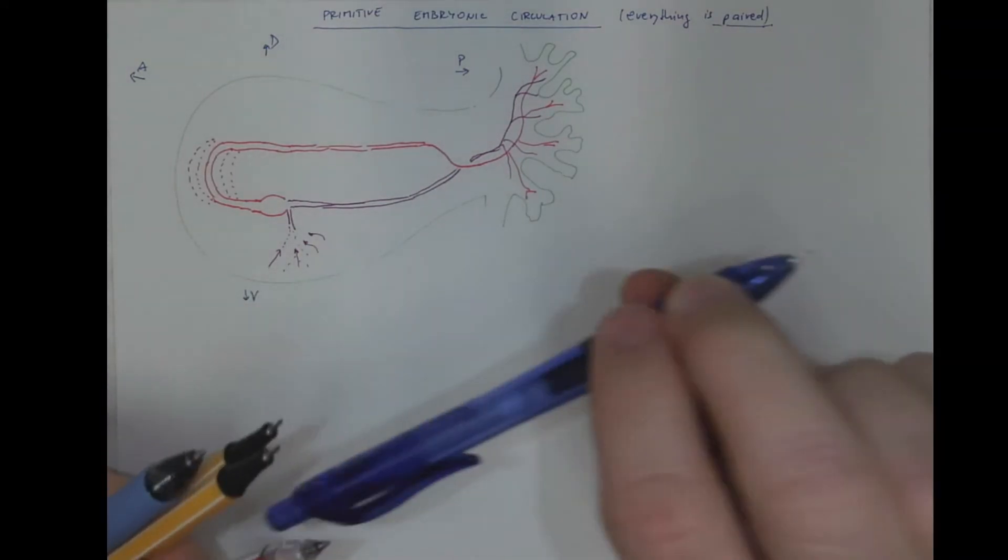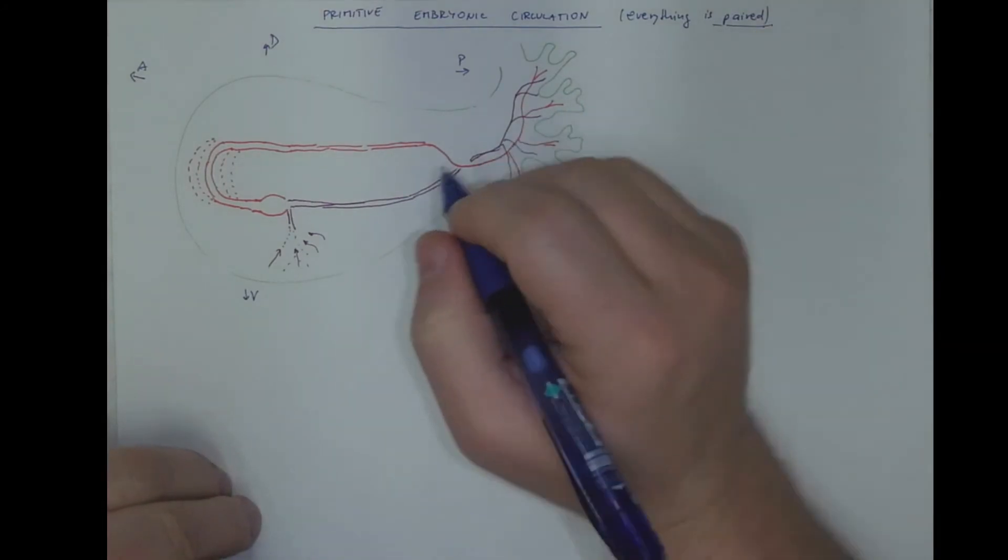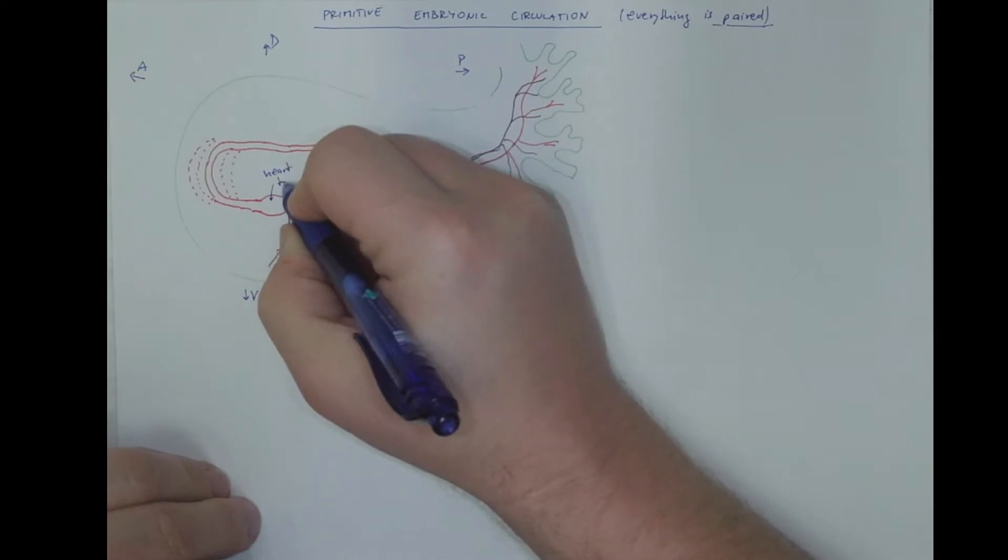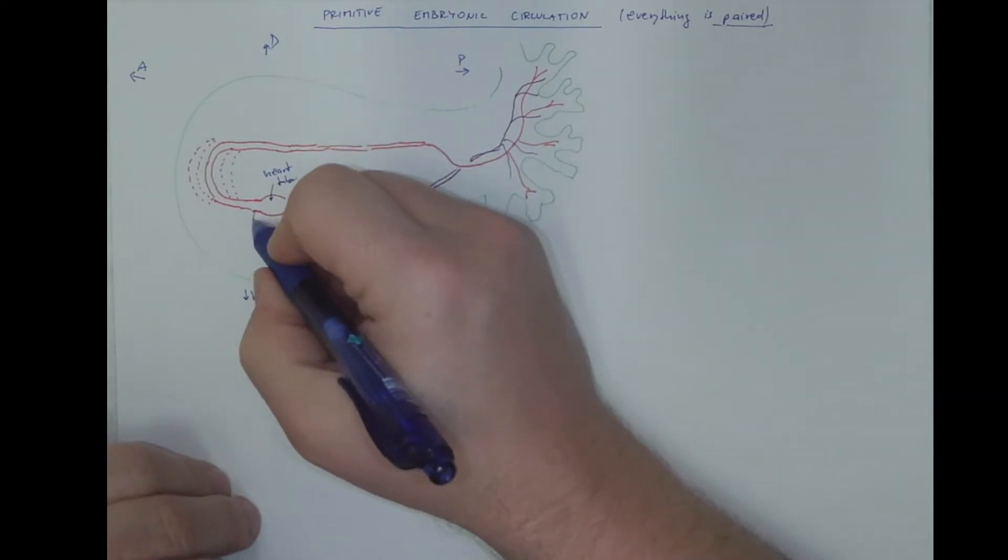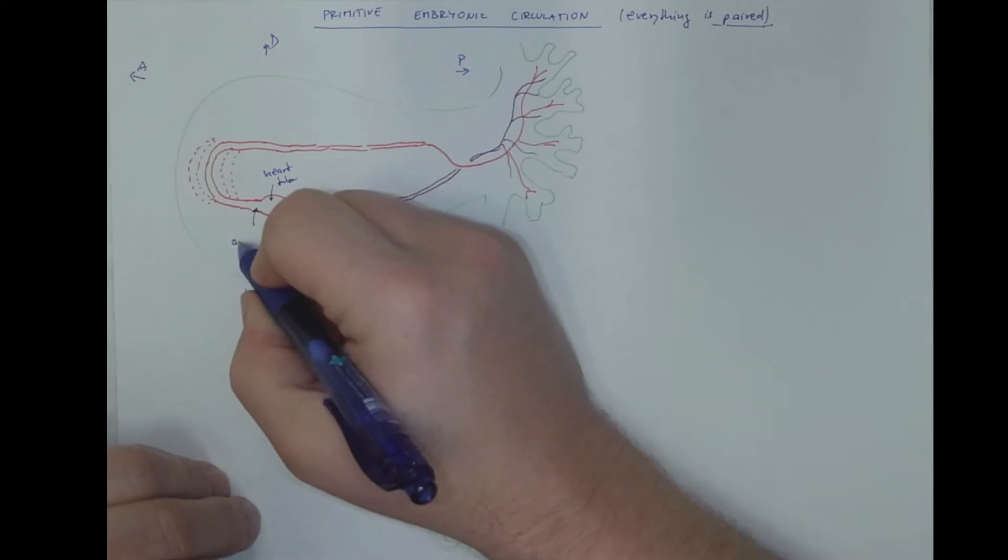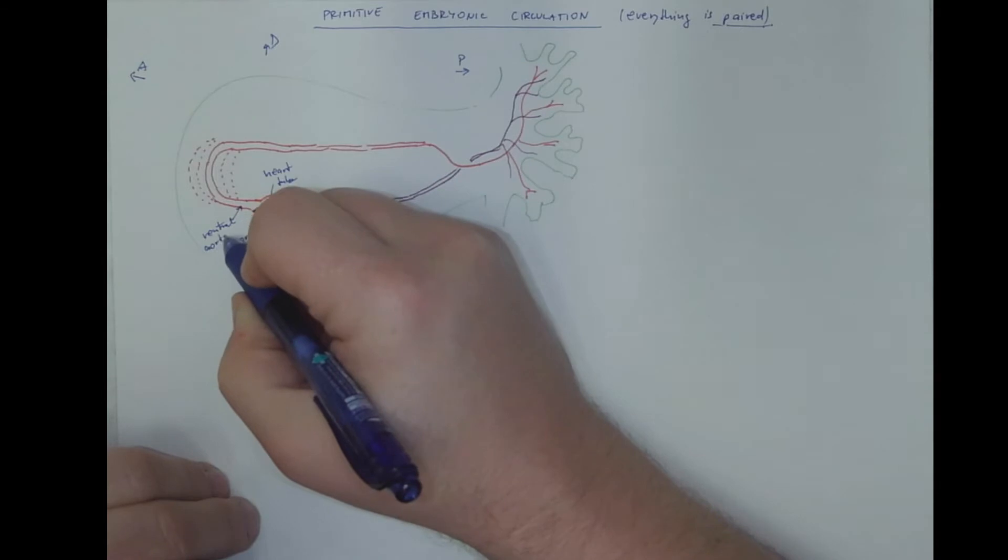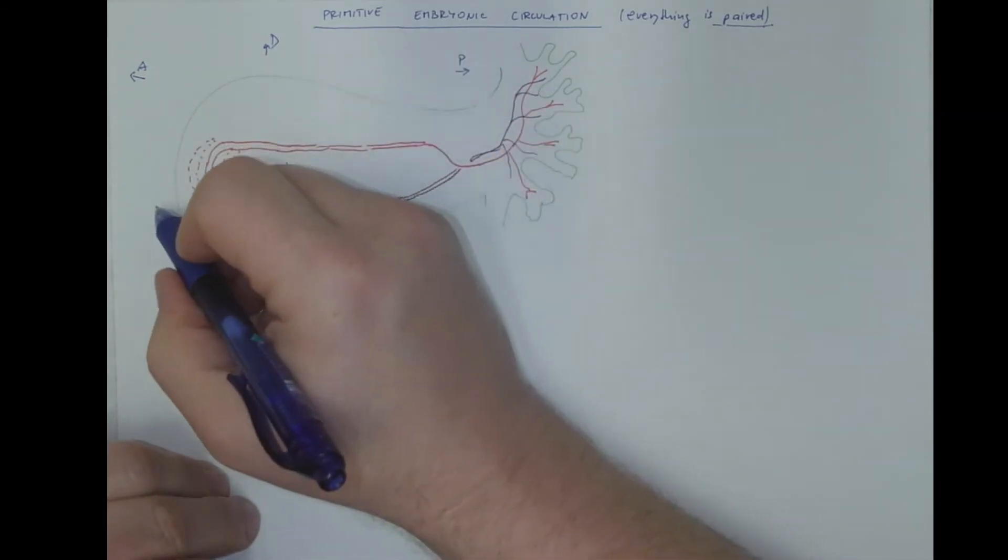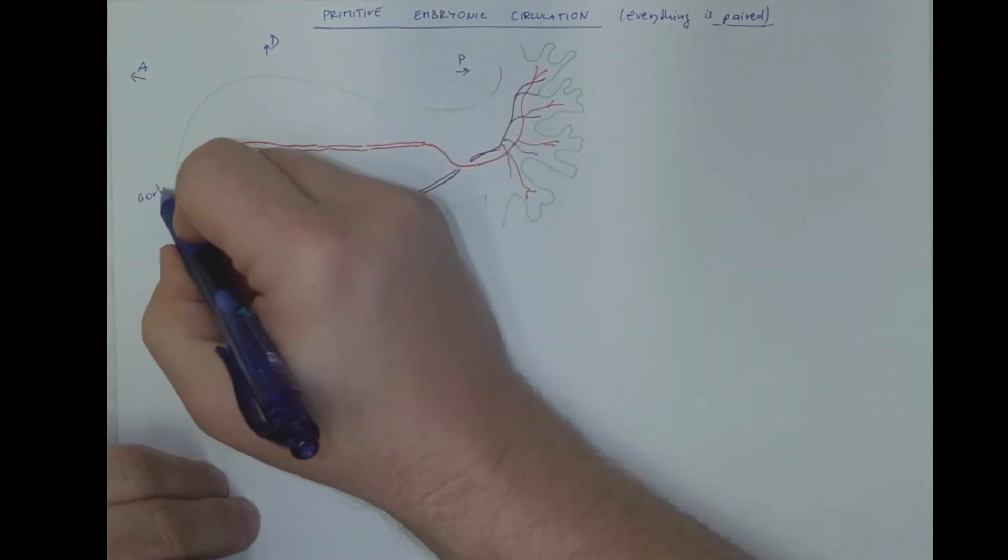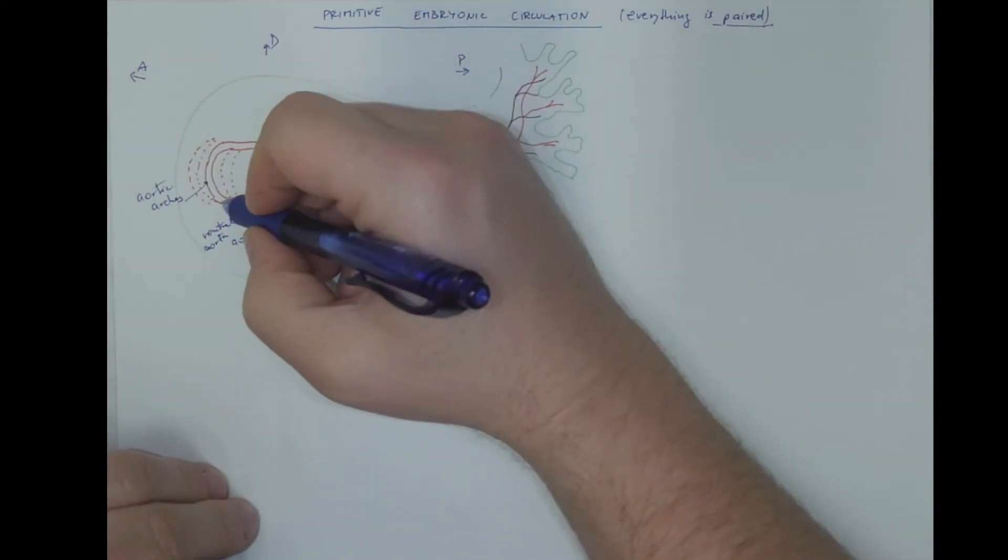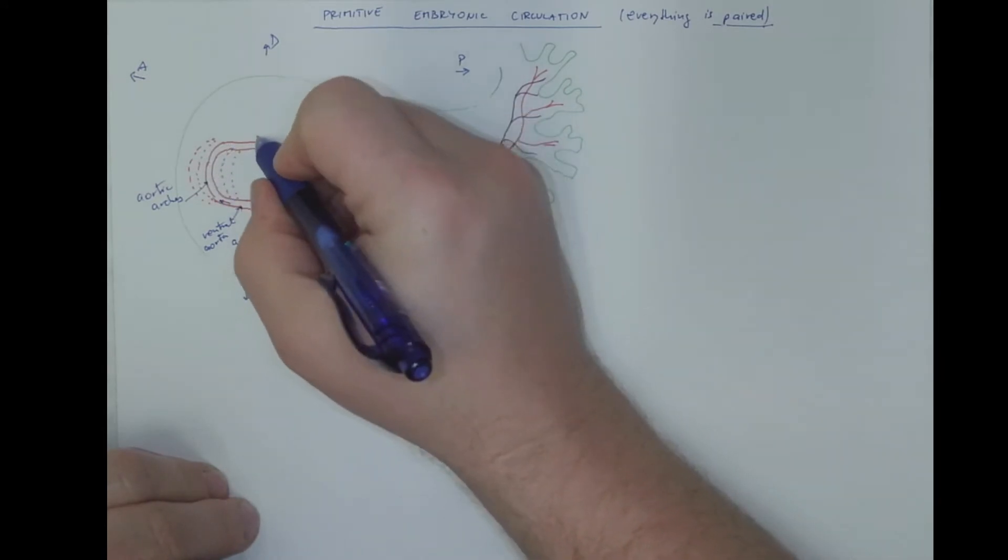So let's label the structures. We got the heart tube. We got the outflow dilated part called aortic sac. We got the short ventral aorta. We got a series of aortic arches through which the blood goes into the dorsal aorta.